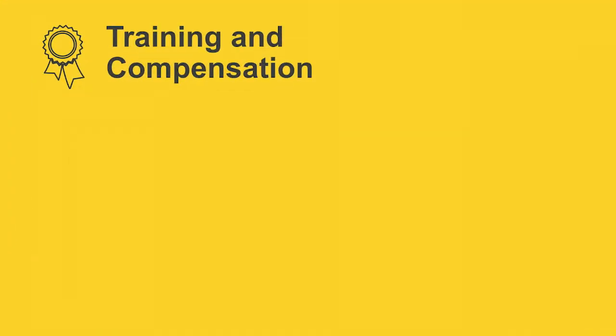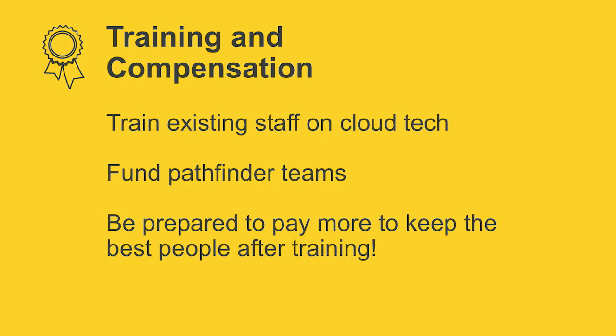Next, skills. Training and compensation is a big issue. You really have to train existing staff on cloud technology. People go out and try to hire, but the key thing is that cloud technology is actually fundamentally easier to deal with than traditional data center technology. Running things as a service is less work than creating them yourselves — the main issue is it's unfamiliar, not difficult. AWS has lots of experience helping people get up to speed, and we have systems integrators and partners who can help. You should also fund Pathfinder teams — small groups that go try things out, figure out what works, then scale those teams.